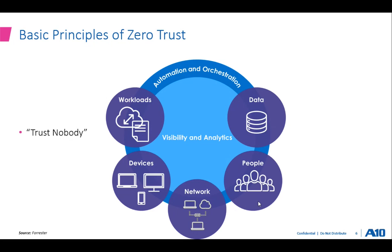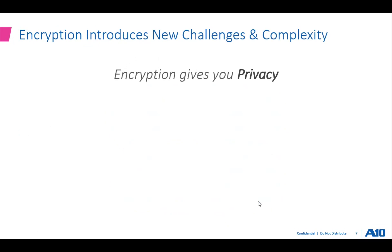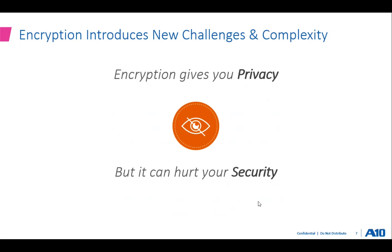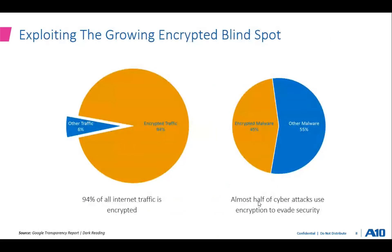When we talk about zero trust, more than 90 percent of internet traffic is encrypted. Encryption introduces new challenges and complexity to achieving zero trust. It gives you privacy, but it can also hurt your security — which we will discuss later. According to Google's Transparency Report, you can verify this data on their website.